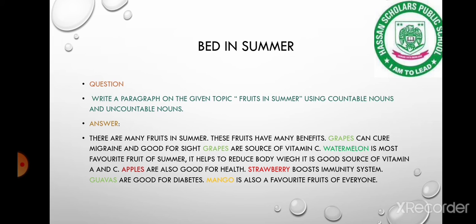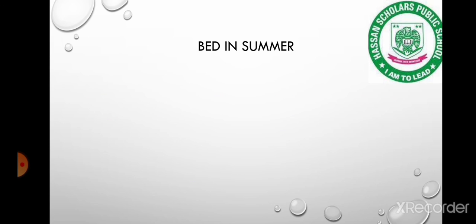Grapes are a source of vitamin C. Watermelon is the most favorite fruit of summer; it helps to reduce body weight and is a good source of vitamins A and C. Apples are also good for health. Strawberry boosts the immunity system. Guavas are good for diabetes. Mango is also a favorite fruit of everyone. Thank you.